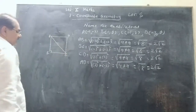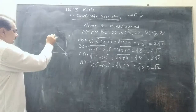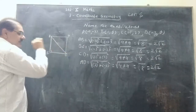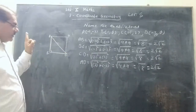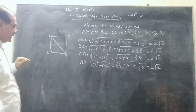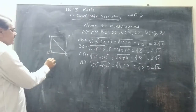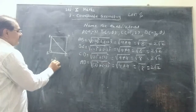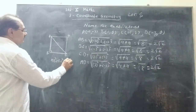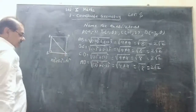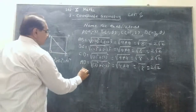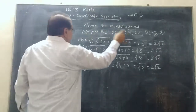Suppose AC is a diagonal. Then for triangle ABC, AC is the hypotenuse. So if I apply the Pythagoras theorem here, then my statement should be: AB² + BC² = AC². So first of all, let me find out AC — the distance between first and third vertices.